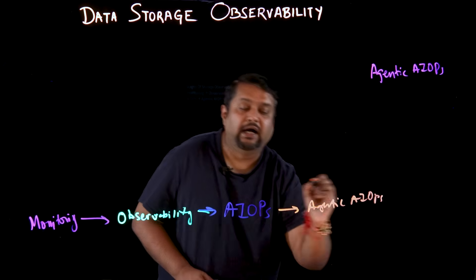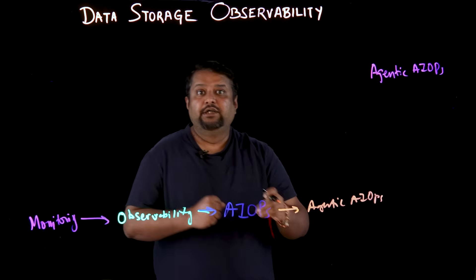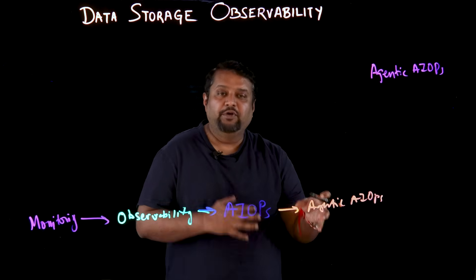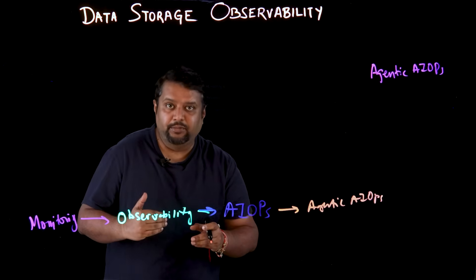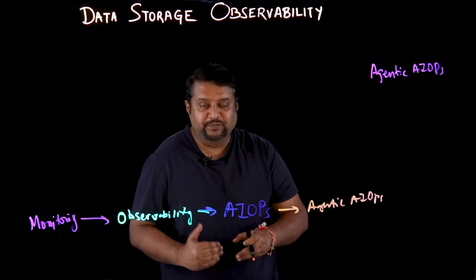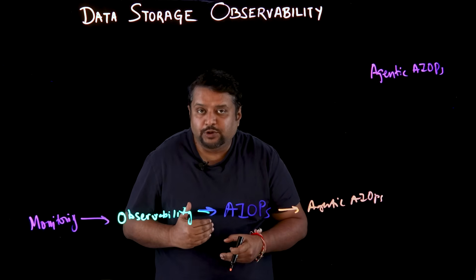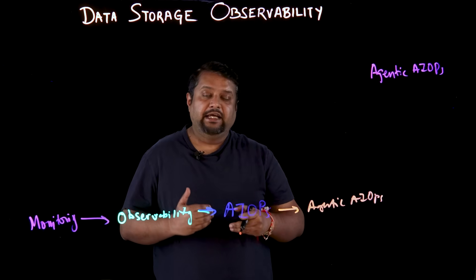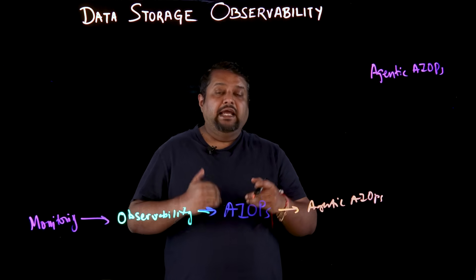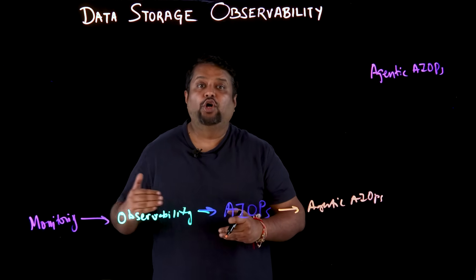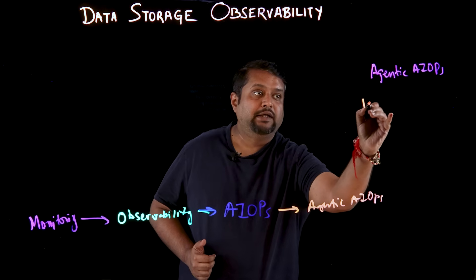What are the use cases where agentic AI ops can take the observability experience a notch further? The first one is autonomous monitoring and response.